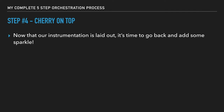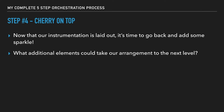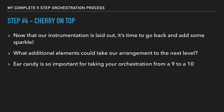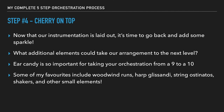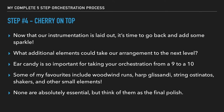Step number four is going beyond that and adding the polish — the cherry on top. Now that our main instrumentation is laid out, it's time to go back and add some sparkle. A good question to ask is: what additional elements could take our arrangement to the next level? Ear candy is really so important for taking your orchestration from a nine to a ten. Some of my favorites include woodwind runs, harp glissandi, string ostinatos, shakers, percussive hits, and other small elements. These are not mandatory — the mandatory ones are the high-priority instruments like the melodic and harmonic instrumentation. But these extras are the polish that take you from the nine to the ten.